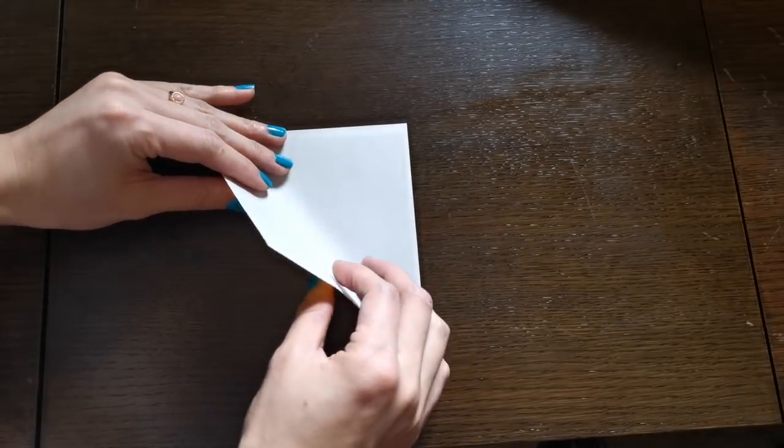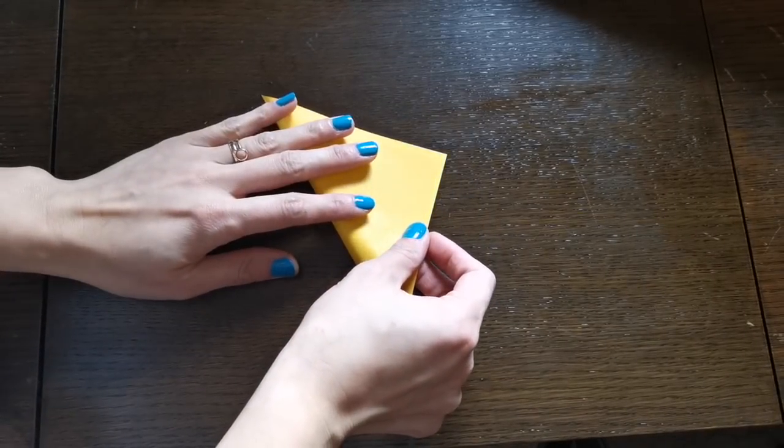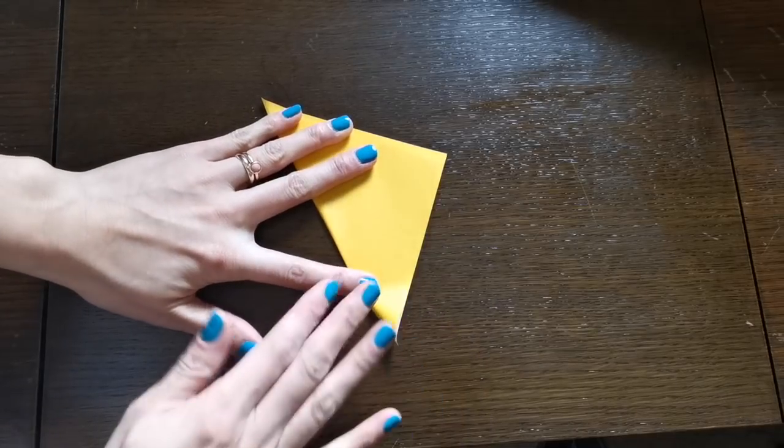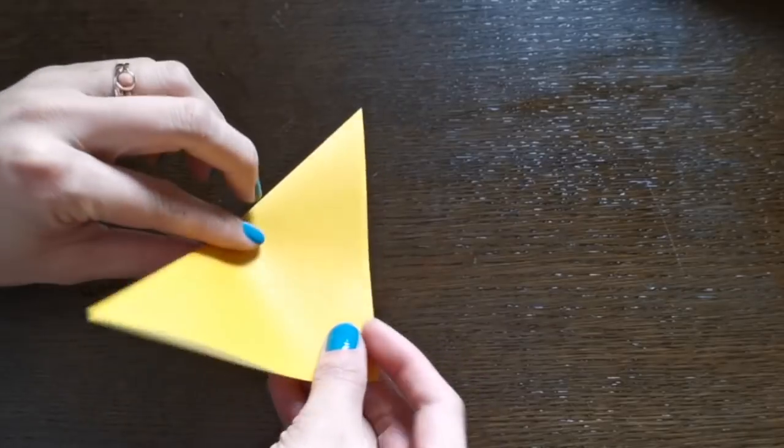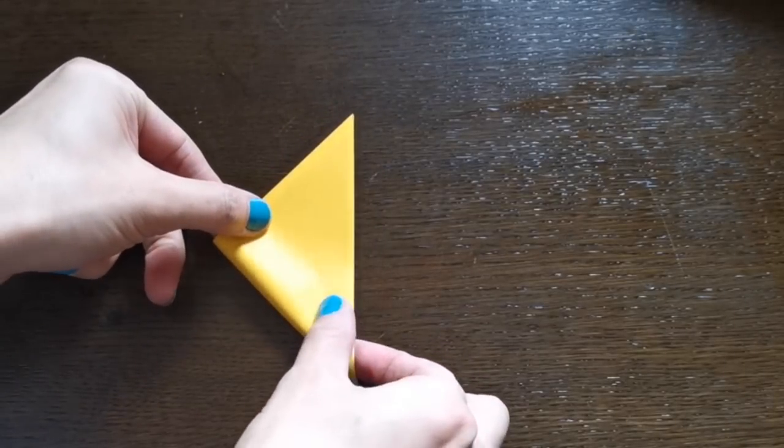Now we're going to start from this side and fold it in half, so leave the color outside. Fold it in half again into a little triangle.